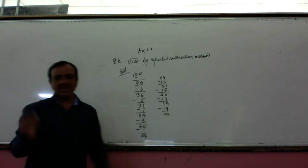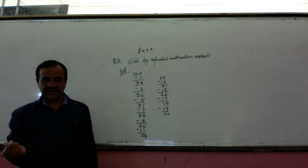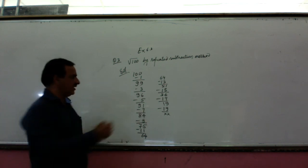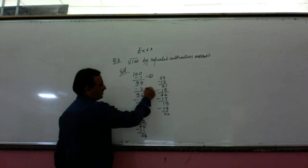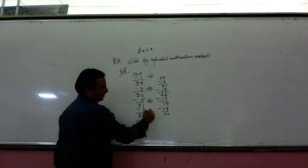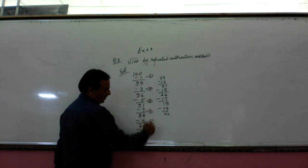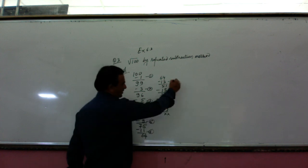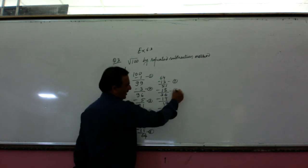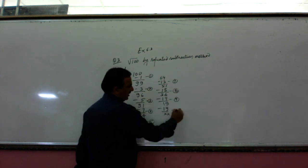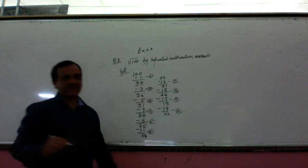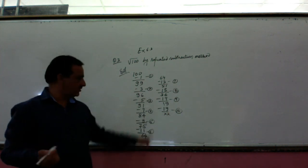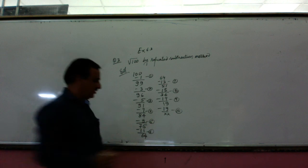So how many odd numbers have we subtracted to get 0? That comes to first odd number, second, third, four, five, six, seven, eight, nine, and ten. So we have subtracted the first 10 odd numbers to get the final answer 0.